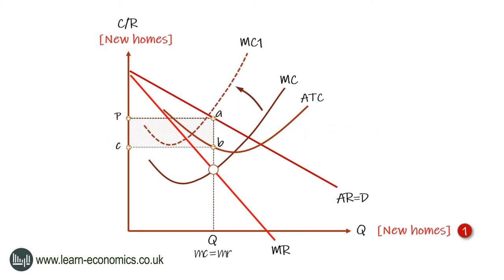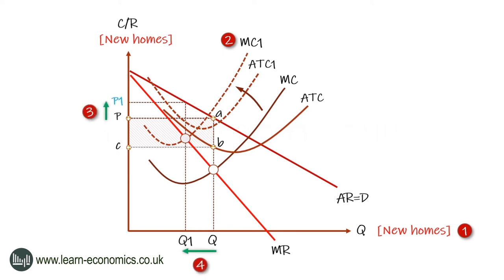Now move the correct curve to represent the cost increase. In this case, the rising cost of cement is an increase in variable costs, which causes the marginal cost curve to shift upwards to MC1. There is a new profit-maximizing equilibrium at Q1, and the price of new houses is driven up to P1.